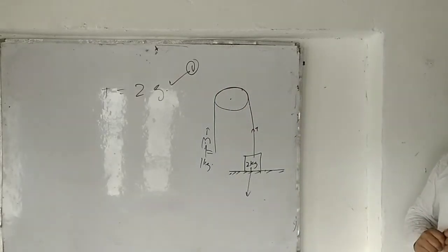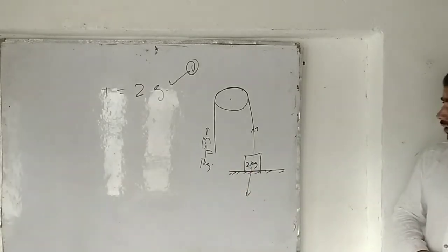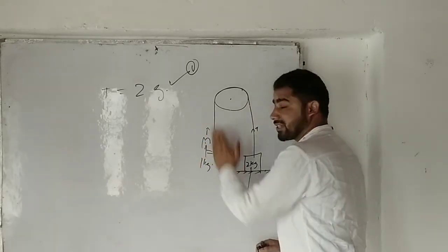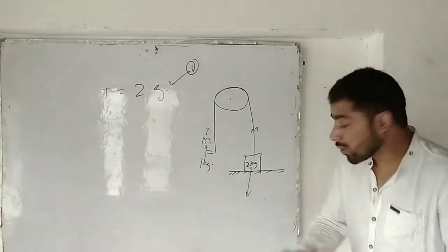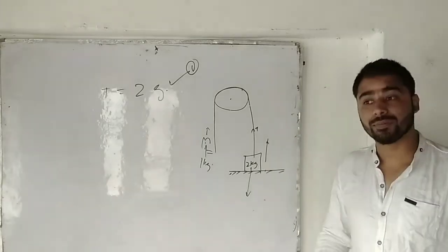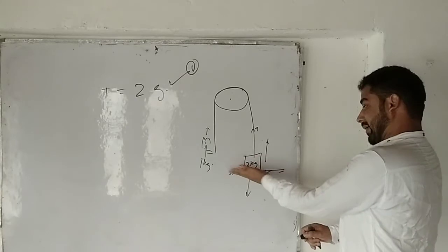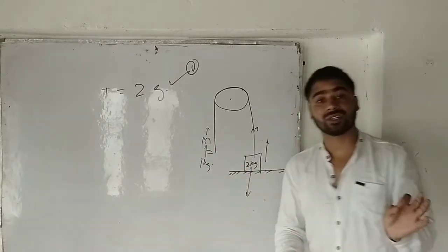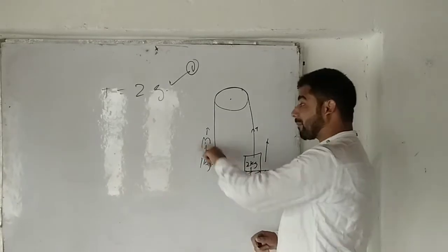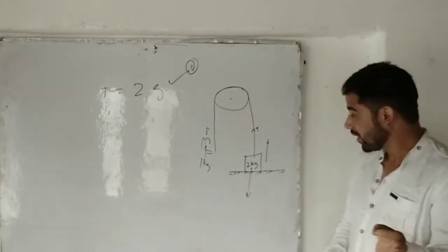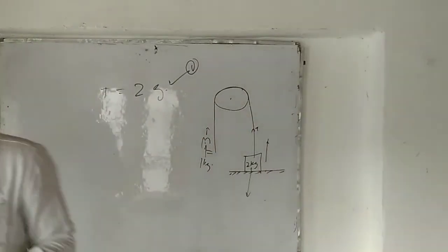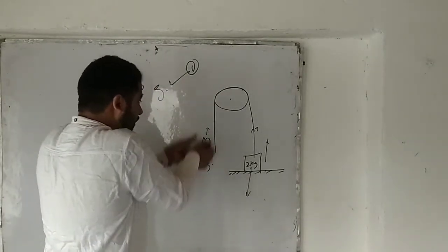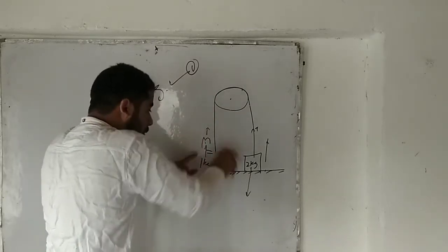As time evolves in the system, the cat moves upwards with respect to the string. Then, at some point, the acceleration of the cat with respect to the string changes to zero — meaning the cat no longer has any acceleration relative to the string. This is a very important statement.